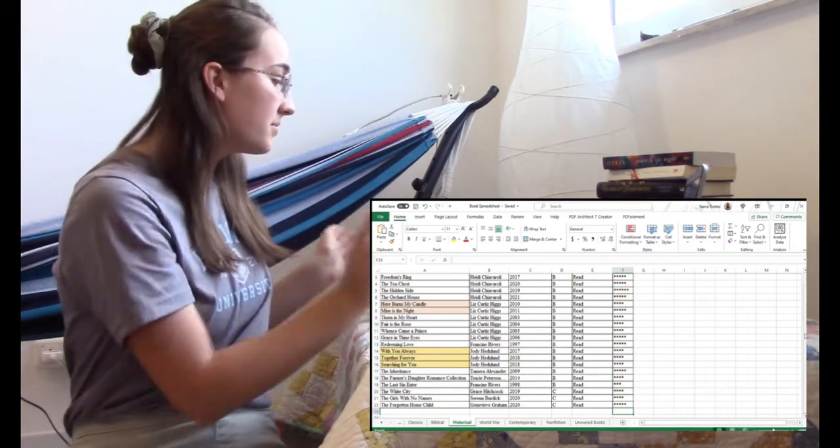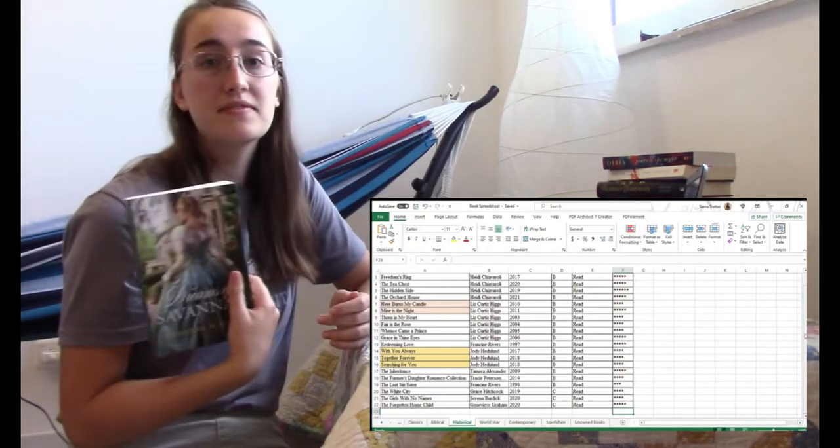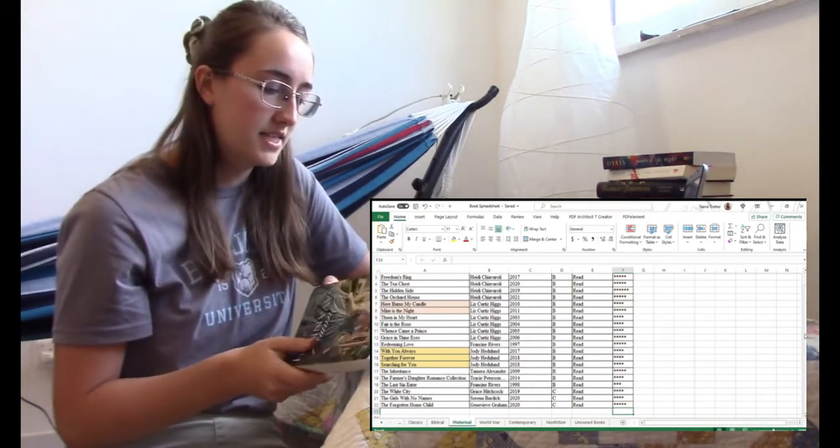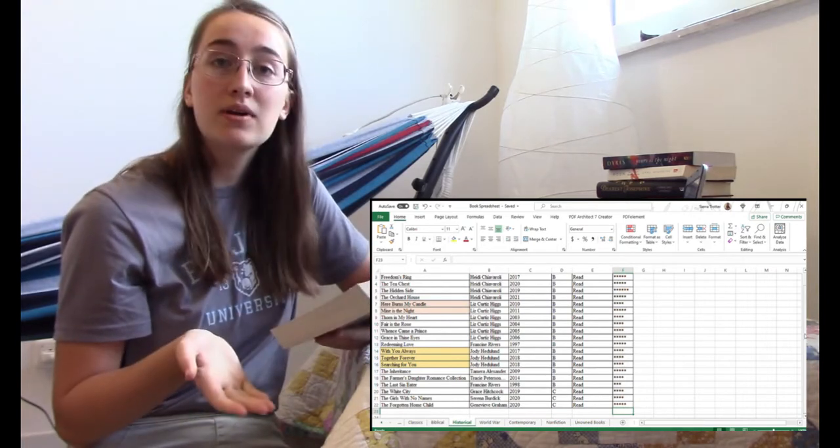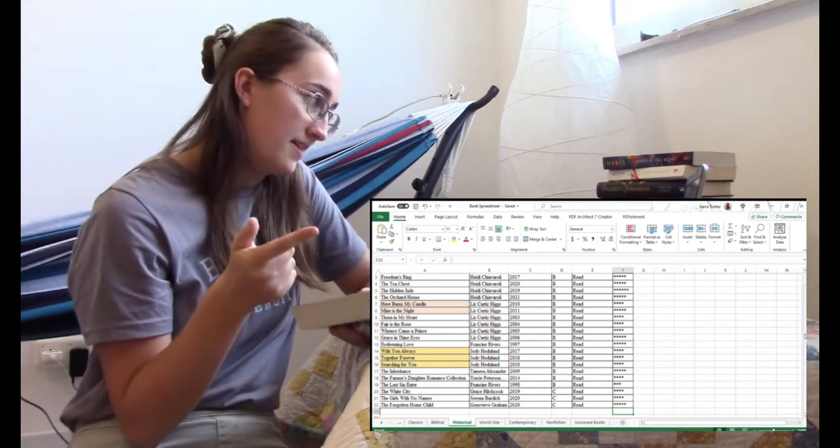And so basically what I do is I pick up the book, and this is Dreams of Savannah. It's set in the Civil War, and I decide where I want it on the lineup. Let me decide that real quick.